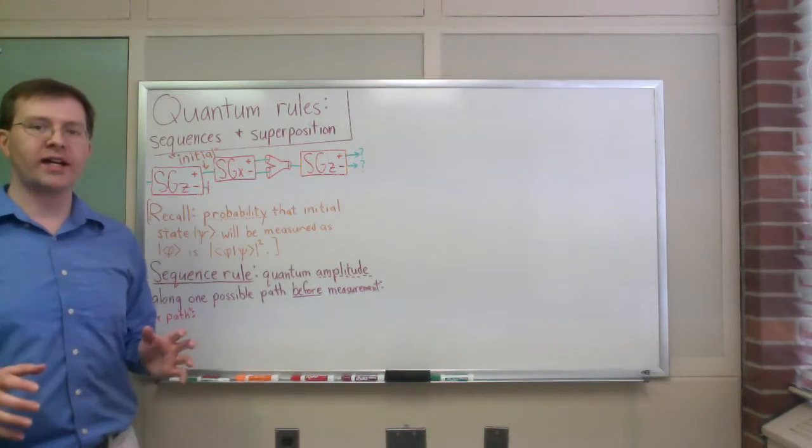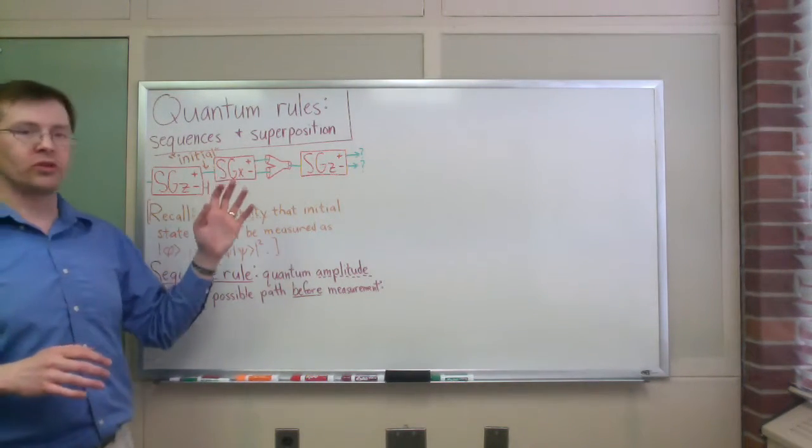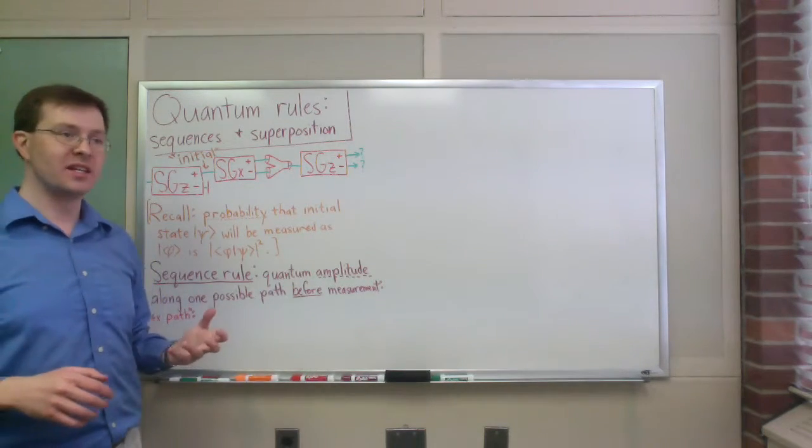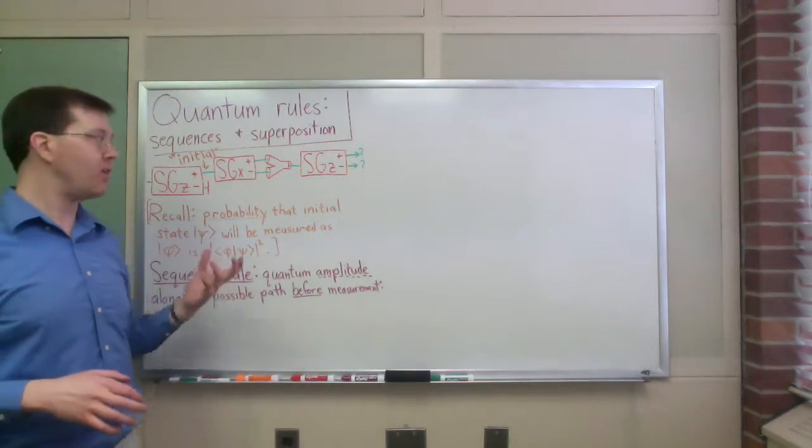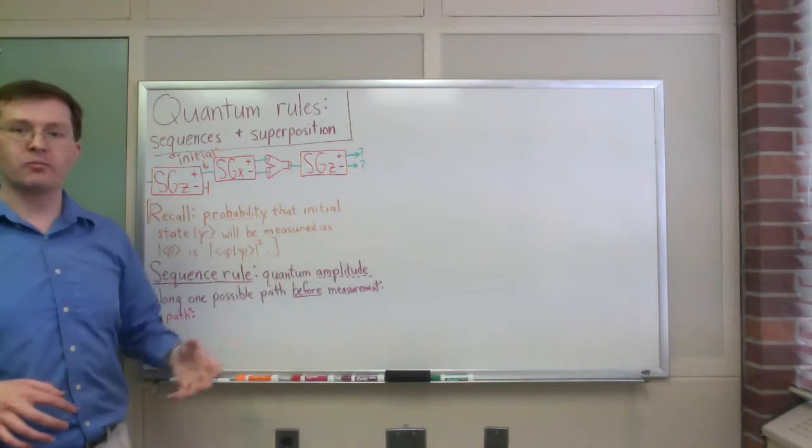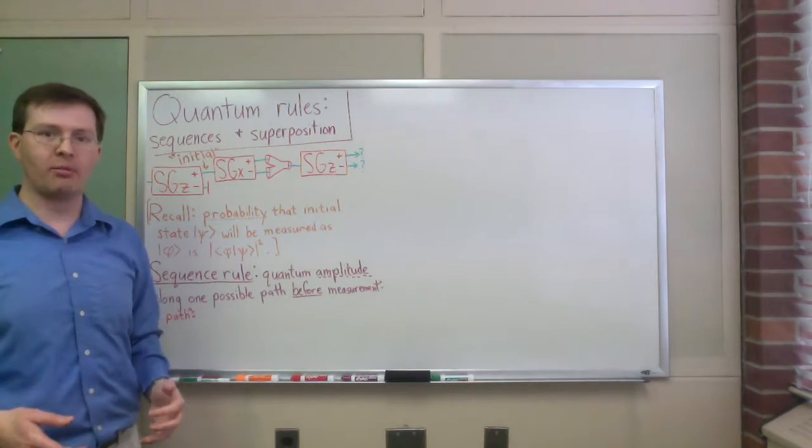I want to do a quick example talking through the basic quantum rules having to do with sequences and superpositions of states as we pass through some complex apparatus.